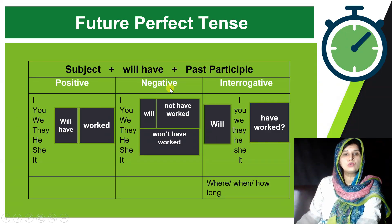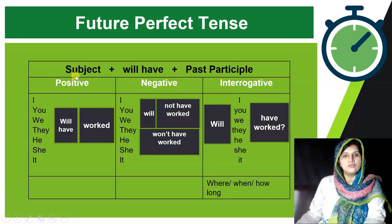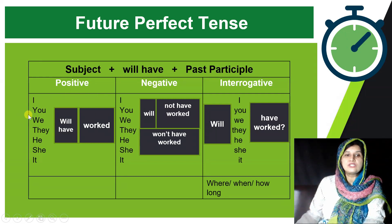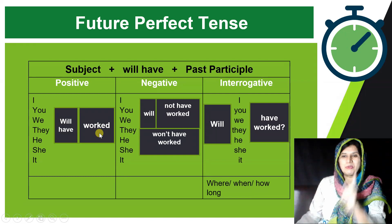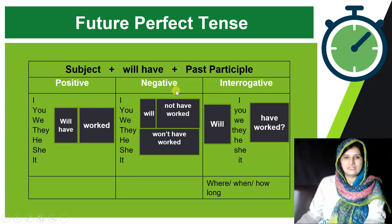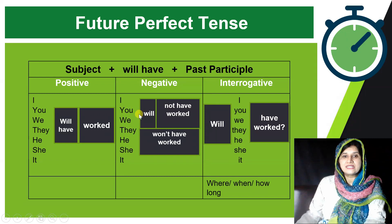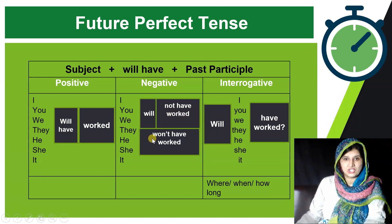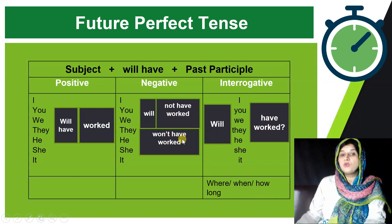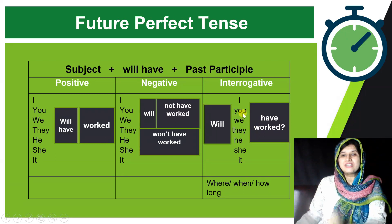Now let's look at the detailed structure. In positive sentences: 'I will have worked,' 'They will have worked,' 'He will have worked,' 'She will have worked.' In negative sentences, simply add 'not': 'I will not have worked,' 'They will not have worked,' 'She will not have worked.' For contractions, use 'won't have': 'I won't have worked,' 'They won't have worked,' 'She won't have worked.'